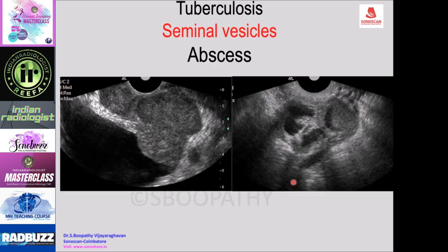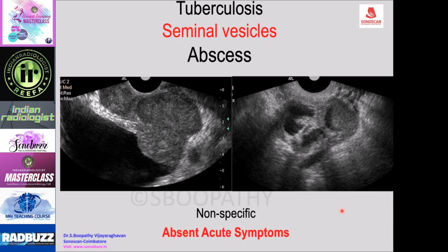Tuberculosis of the seminal vesicles can present as a heterogeneous mass or abscess, which is non-specific and cannot be differentiated from a pyogenic abscess. Evidence of tuberculosis elsewhere in the urinary tract or scrotum, chronicity of symptoms, and absent acute symptoms should raise suspicion. Biopsy or aspiration from the abscess will give the diagnosis.